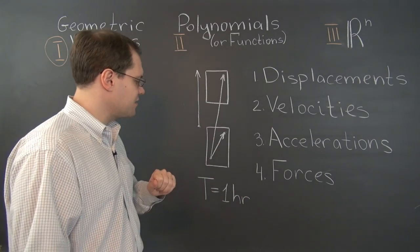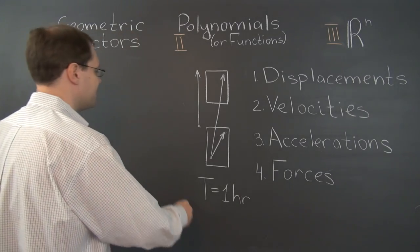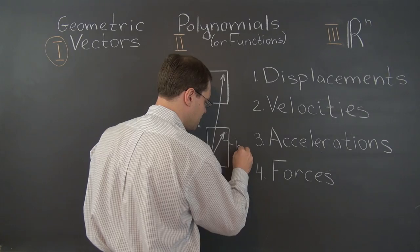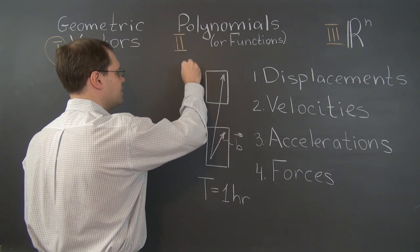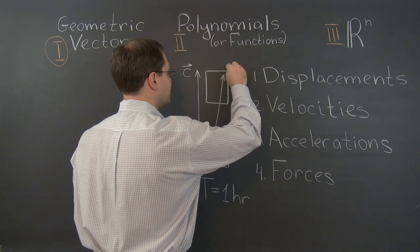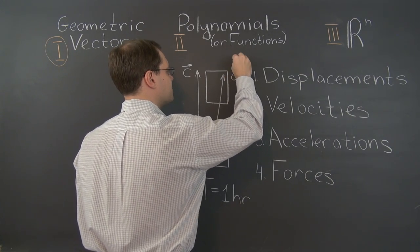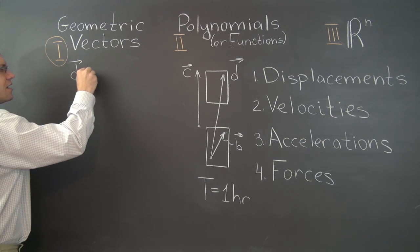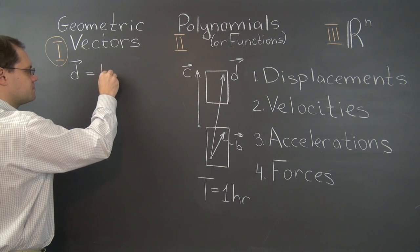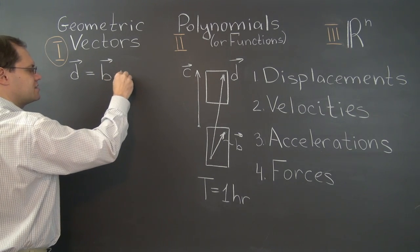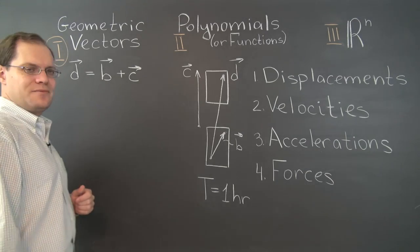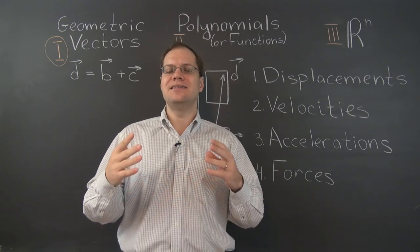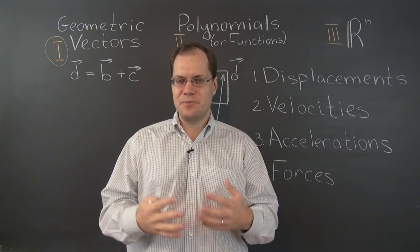Let's capture this fact algebraically. We'll call the bug's displacement vector B, the car's displacement vector C, and the net displacement vector D. So we can write D = B + C. The tip-to-tail rule, our fundamental rule for adding geometric vectors, continues to work even when the displacements are concurrent.